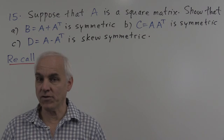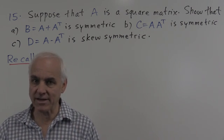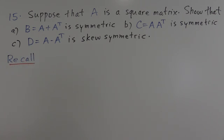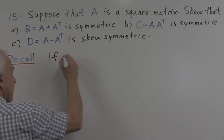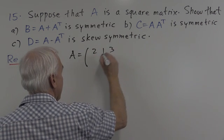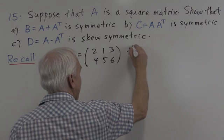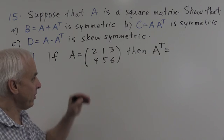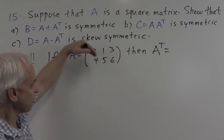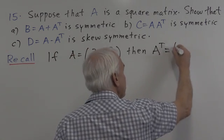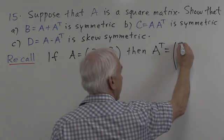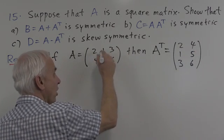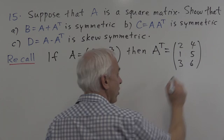I have to remind you of a few definitions, terminology, and basic facts having to do with transposes and symmetric matrices. Recall that if the matrix A is 2 1 3 4 5 6, then the transpose of that matrix is obtained by flipping the matrix over on a diagonal, so that the rows of the original matrix become the columns of the transpose, or conversely, the columns of the original matrix become the rows of the transpose.